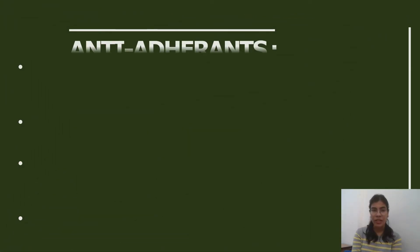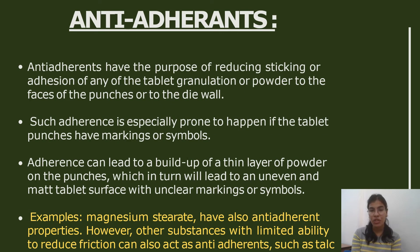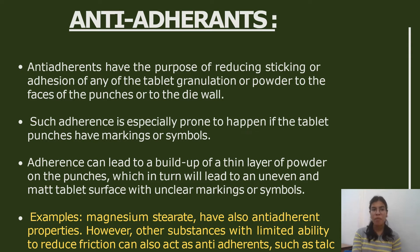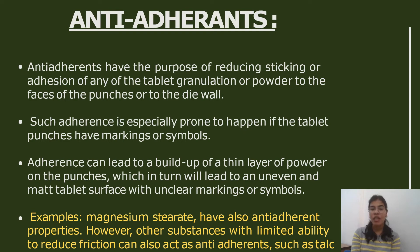Another class is anti-adherents. Anti-adherents have the purpose of reducing the sticking or adhesion of tablet granulation or powder to the faces of the punches or to the die wall. Sticking is especially prone to happen if the tablet punches have symbols and markings. Adherence can lead to a buildup of a thin layer of powder on the punches, which can lead to uneven manufacturing of the tablet. Examples of anti-adherents include magnesium stearate; talc can also act as an anti-adherent with limited ability.